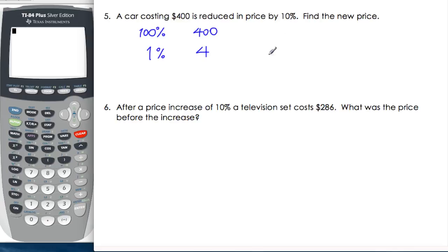And our goal? It's reduced by 10%, so it should be 90%. Okay. So to get from 1% to 90%, we multiply by 90. So 4 times 90 is $360, is the new price of the car after the reduction. Okay, again, different methods, but this is really nice and clean. And the advantage, I think, is that it works the same backwards and forwards.